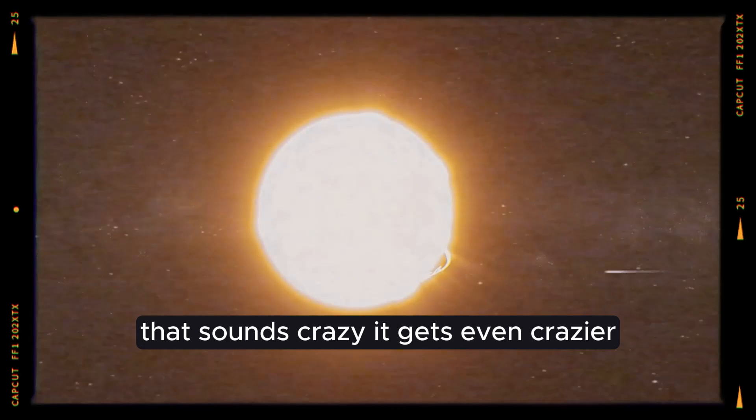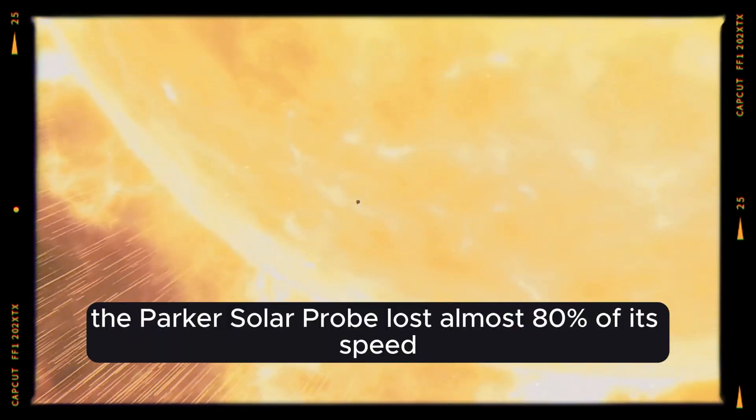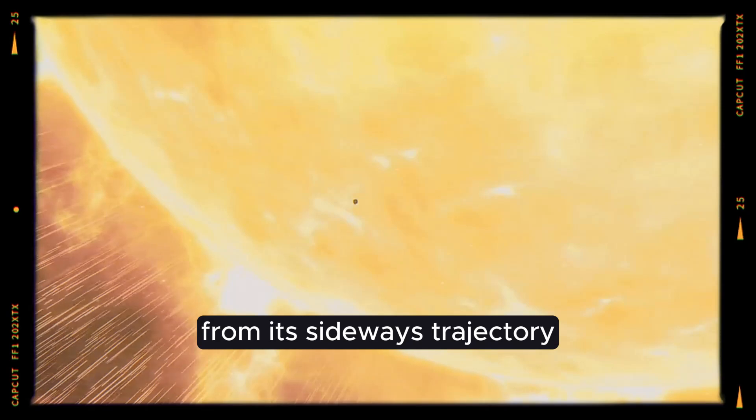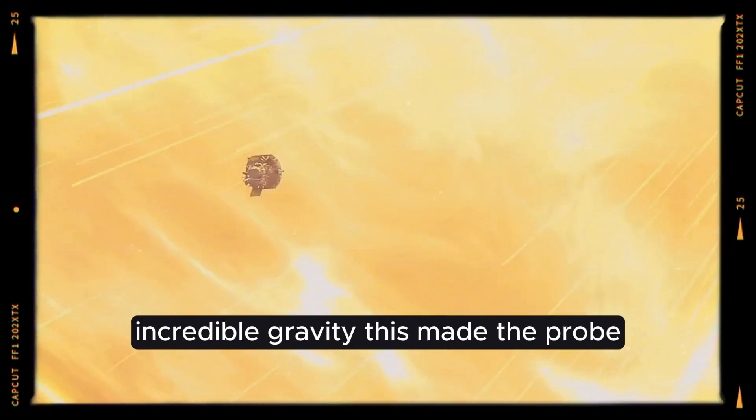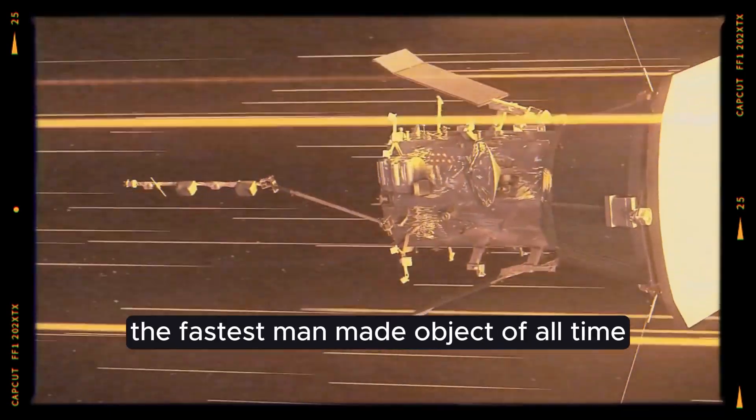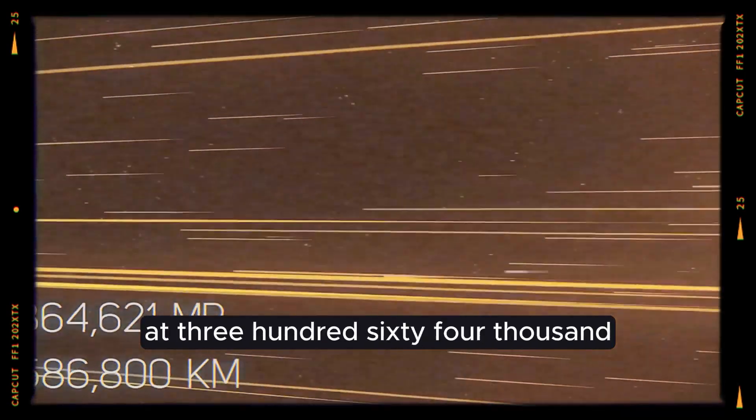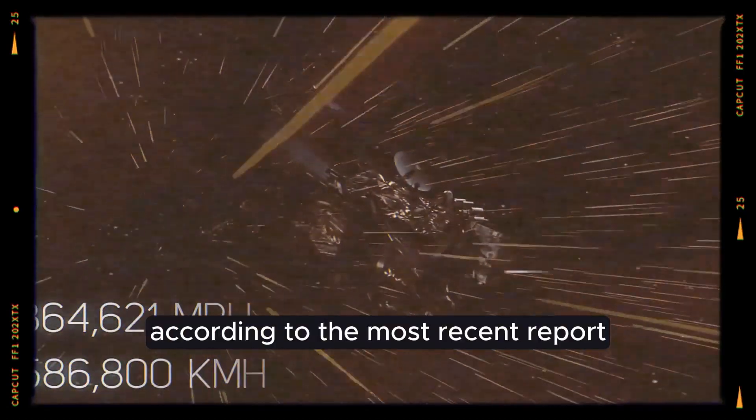That sounds crazy. It gets even crazier. The Parker Solar Probe lost almost 80% of its speed from its sideways trajectory at launch because it was pulled in by the sun's incredible gravity. This made the probe the fastest man-made object of all time at 364,621 miles per hour, according to the most recent report.